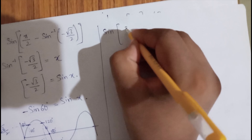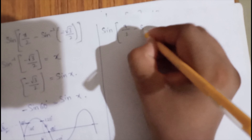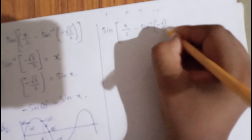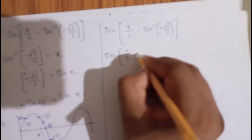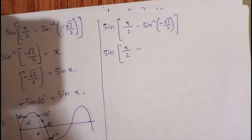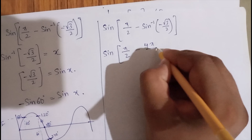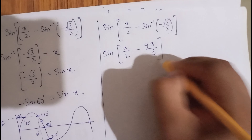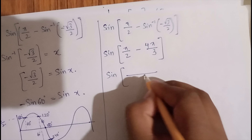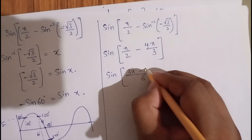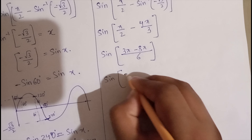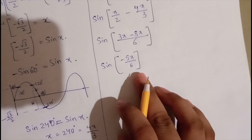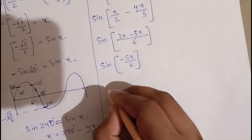Now substituting back, we have sine of (π/2 minus sine inverse of that entire number), which is 4π/3. Solving: taking the LCM as 6, we get (3π minus 8π) by 6, giving sine of minus 5π/6.